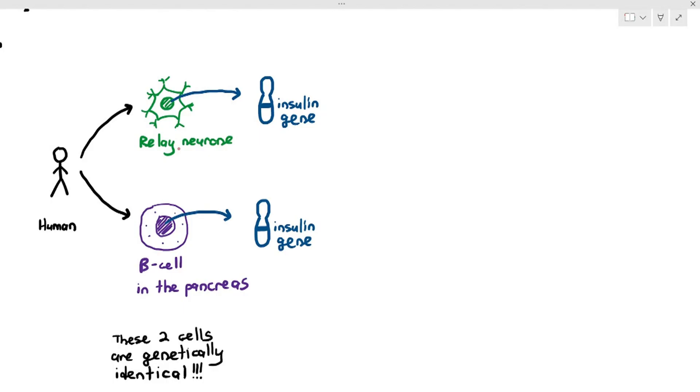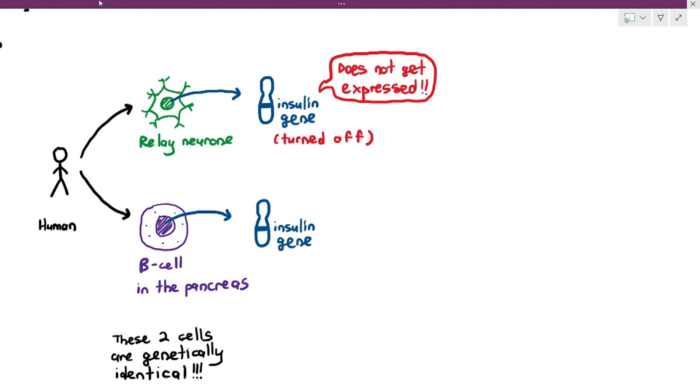If they're all exactly the same, why do these cells behave differently? Well, to keep a complicated issue short, we can basically say that even though both the relay neuron and also the beta cell in the pancreas have the insulin gene, in the relay neuron, the insulin gene is turned off, which means to say that the gene is not expressed. Yes, genes just like switches, the lamp switches that you have on your wall, can be switched on and switched off.